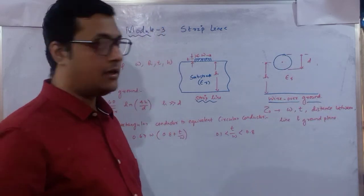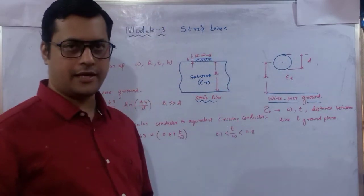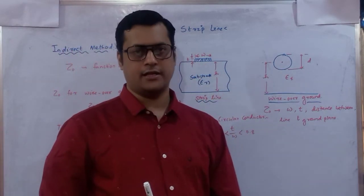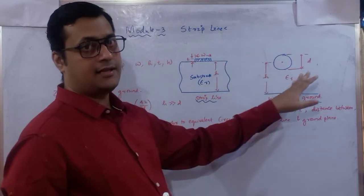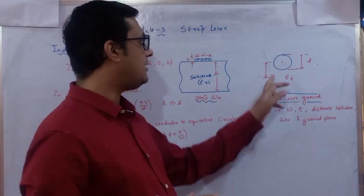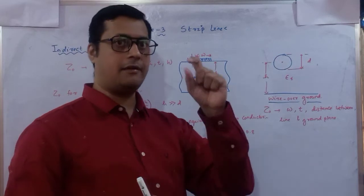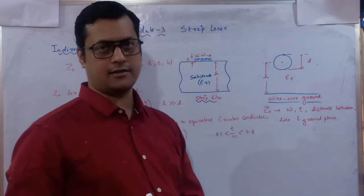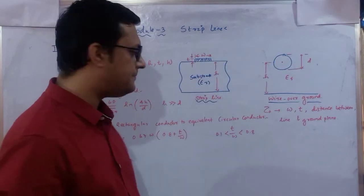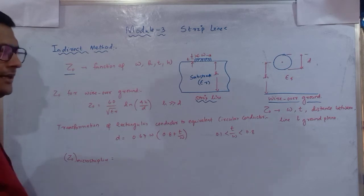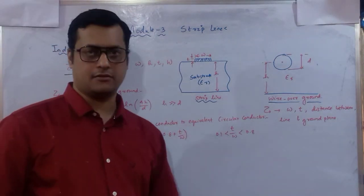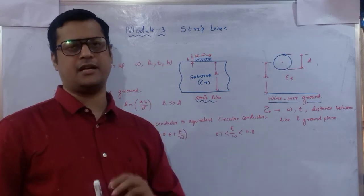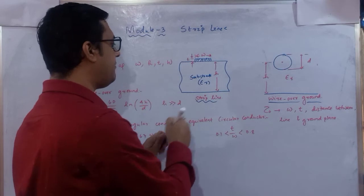We will convert the rectangular microstrip parameters into an equivalent cylindrical system. Microstrip lines are rectangular in nature, operating in quasi-TEM mode. We consider a single circular conductor of diameter d placed at height h above the ground plane, and convert this cylindrical parameter into the rectangular system.